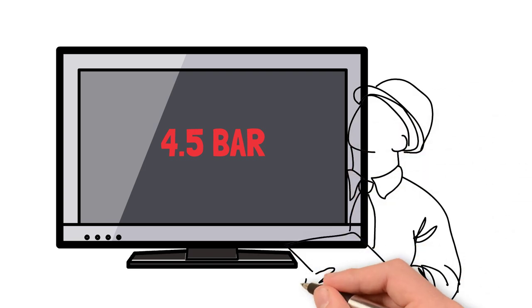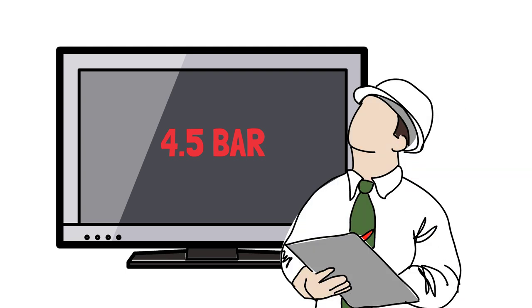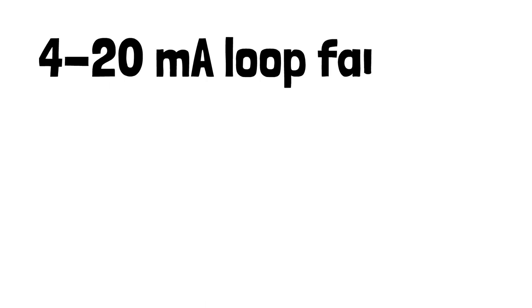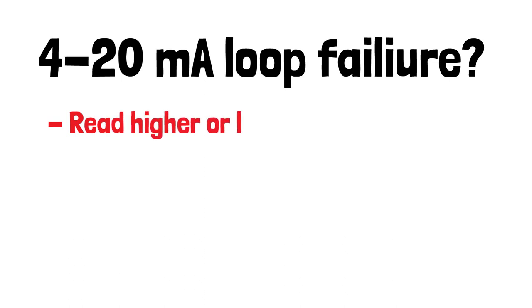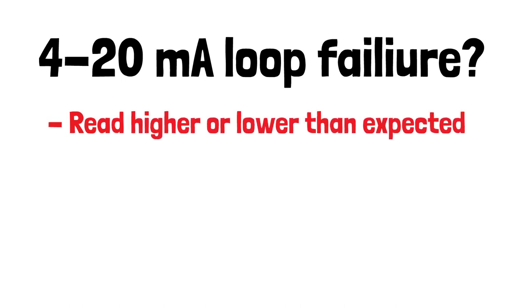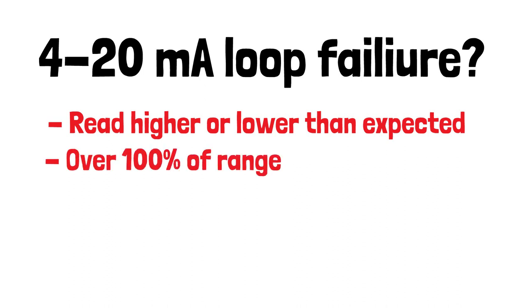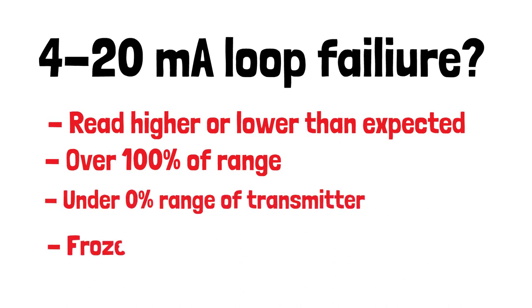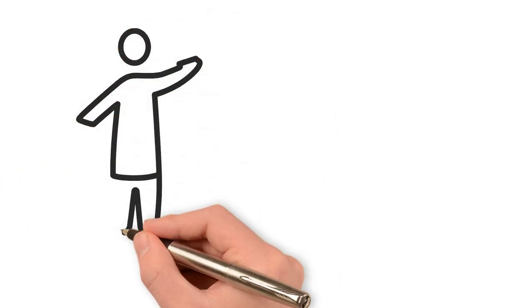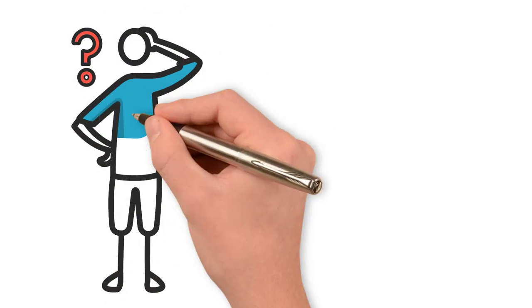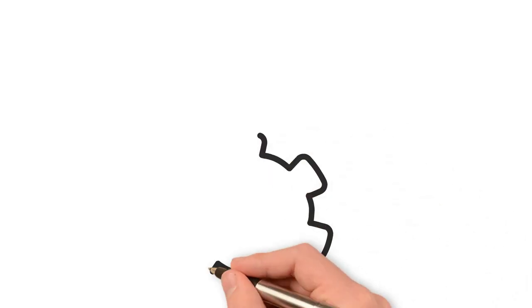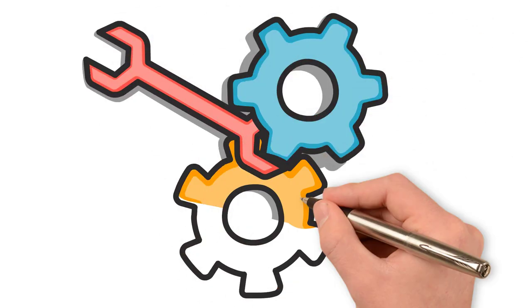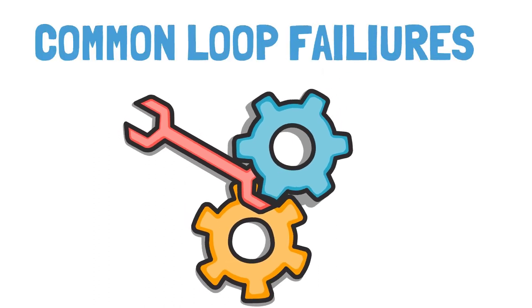This is fairly representative of what you might find out there on various sites across different industries. The typical 4 to 20 milliamp loop may fail in a few different ways. The common faults the operator may report are: an instrument reading higher or lower than expected, an instrument failing by going over the 100% range value or under the 0% range, or a process instrument reading frozen over long periods of time. Even though there are only a few ways the transmitter can show an issue to the operator, there are lots of different causes of these faults. I'm going to cover some of the most common types of 4 to 20 milliamp loop failures common to all electrical transmitters.